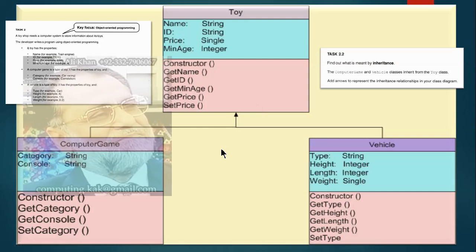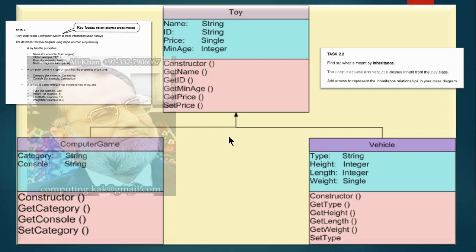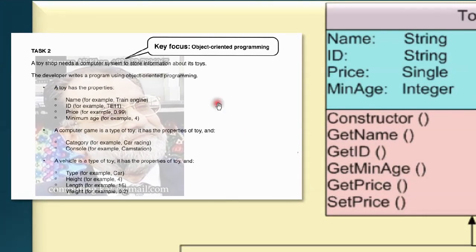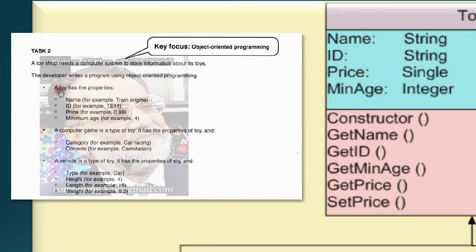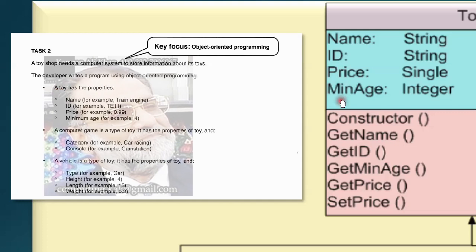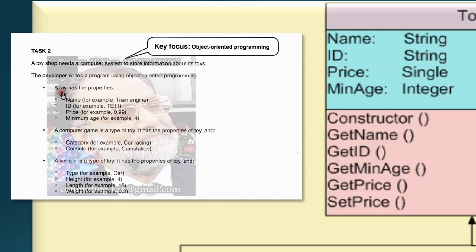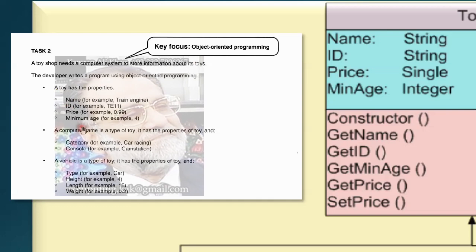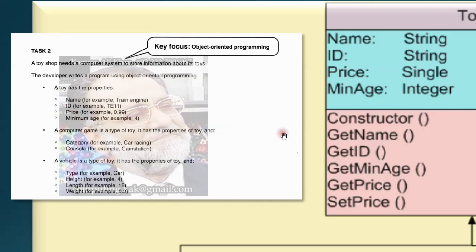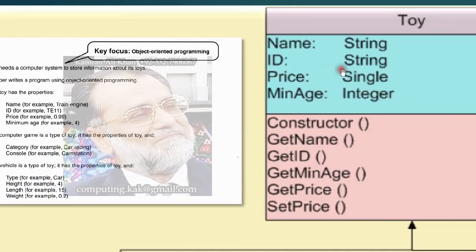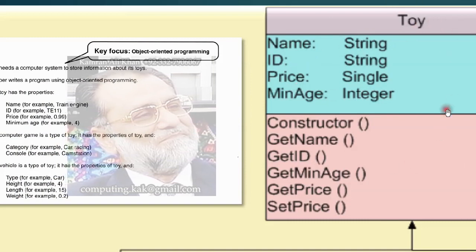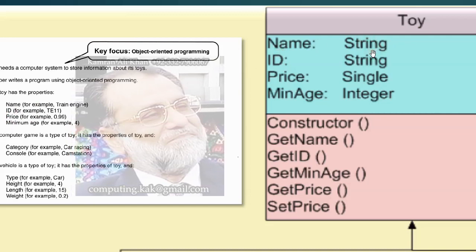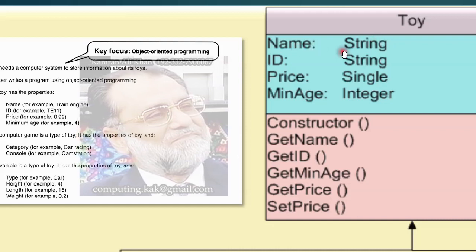Now this is the solution. We are supposed to first write a class in this class diagram — we need to show a class called Toy, and this Toy has four properties: name, ID, price, and minimum age. In order to complete this diagram we need to have these properties with their proper data types. Name will have a data type of String, ID is also String.